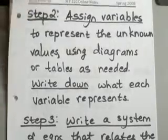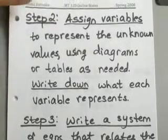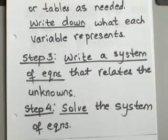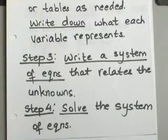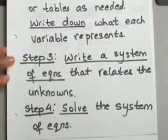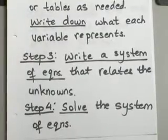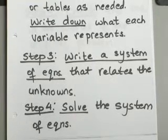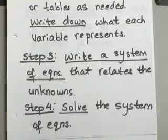Then in step three, you will write a system of equations that relates to the unknowns. Just like you have seen us solve systems of equations, you will have to come up with one so that you can relate your unknowns. And the next thing you will do is, of course, solve the system of equations.